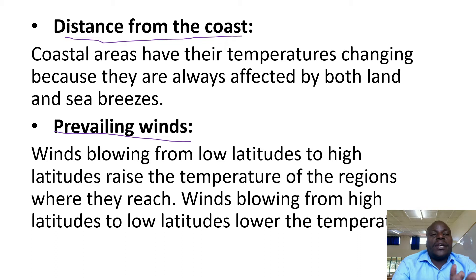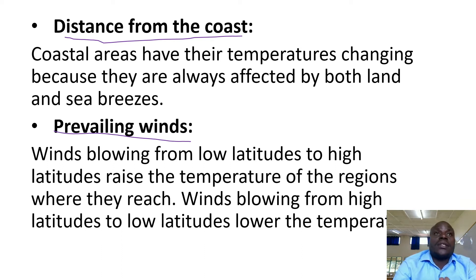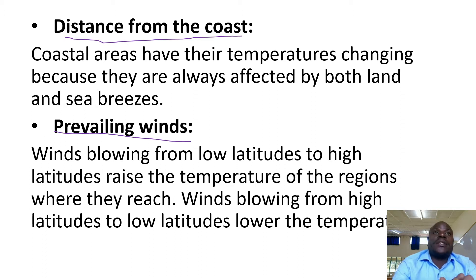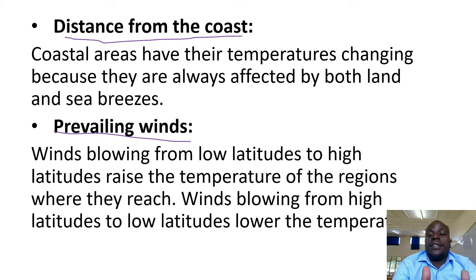Then we have prevailing winds. This can be well explained under the planetary wind system. Some winds blow from polar regions to the doldrums, and other winds blow from the doldrums and middle latitudes to the polar regions, carrying air of different temperatures. Therefore, different regions served by these different winds will end up having different temperatures.